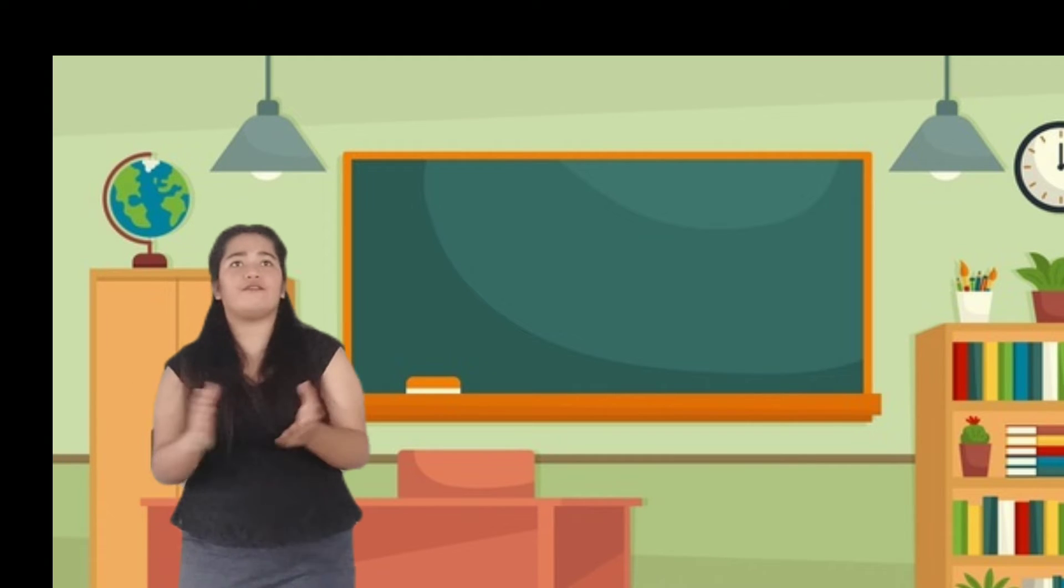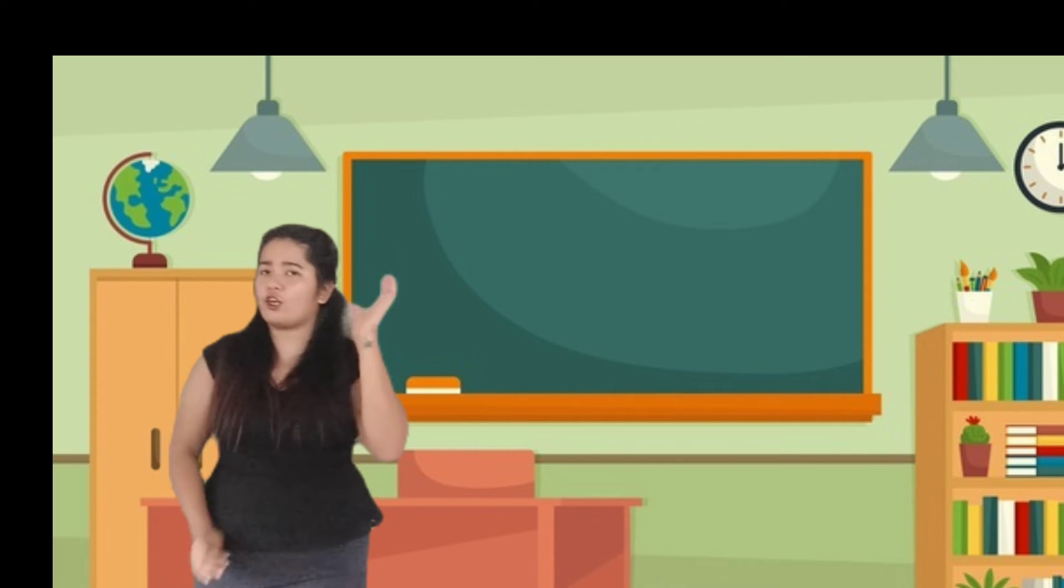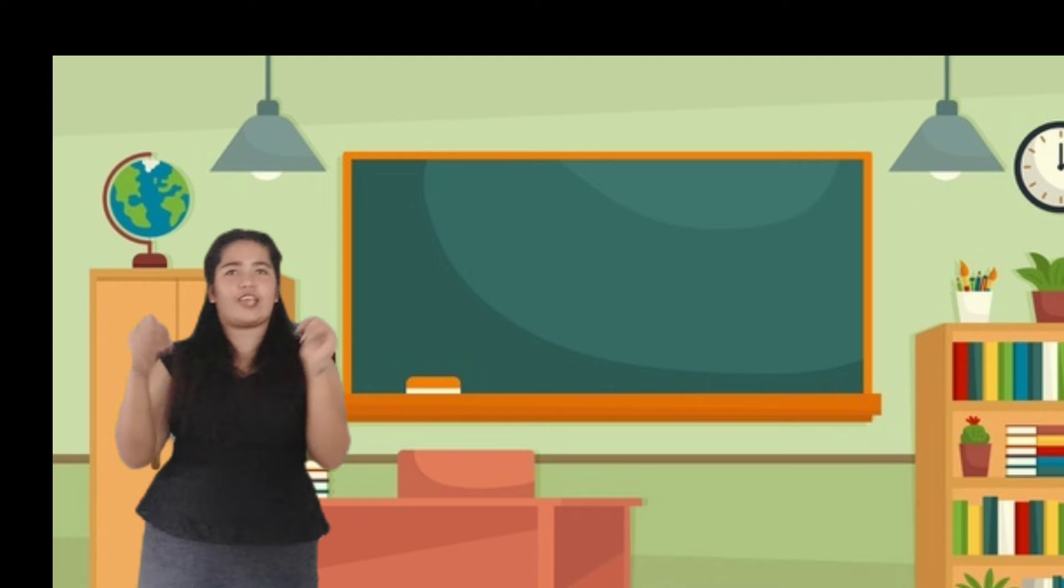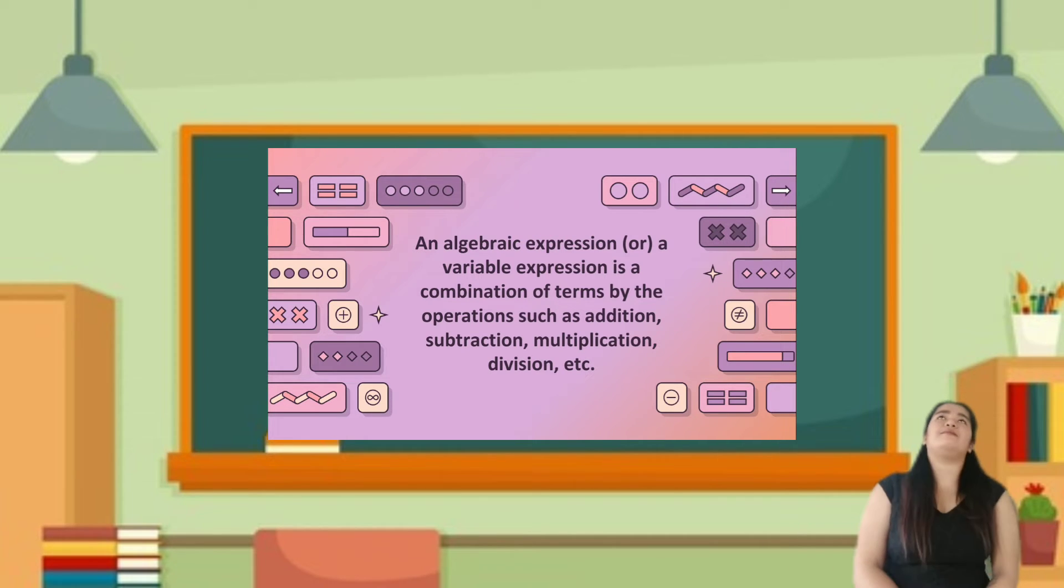Now, we will discuss how to evaluate an algebraic expression. Do you want to know how? I can't hear you, class. Okay. Let's start our discussion. An algebraic expression or a variable expression is a combination of terms by the operations such as addition, subtraction, multiplication, division, etc. A variable is a sign that symbolizes one or more numbers, generally a letter. Numbers, variables, and methods make up an algebraic expression.